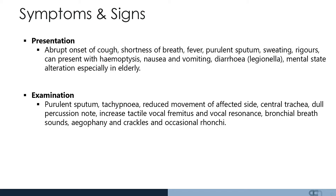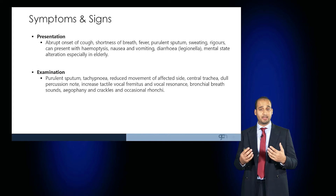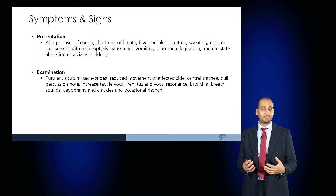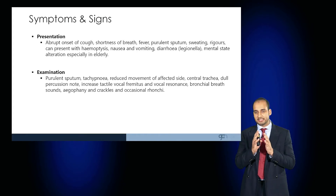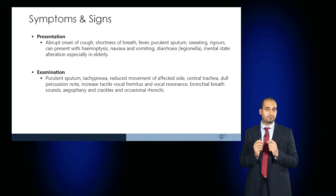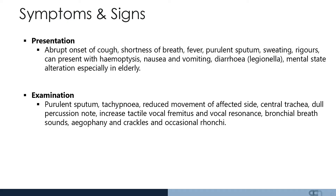On examination you may notice purulent sputum and the patient may appear tachypnoeic. On the affected side they may have reduced chest wall movements. The trachea would be expected to be central, but on percussion there would be a dull note with increased tactile vocal fremitus and resonance, as sound is transmitted more easily through the consolidated lung, and they would have bronchial breath sounds, crackles and ronchi with aegophony.